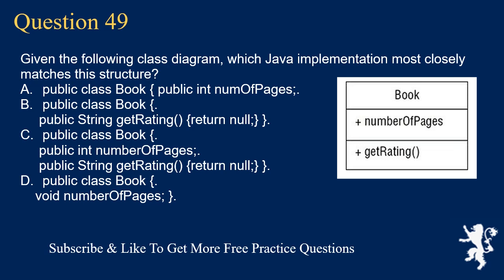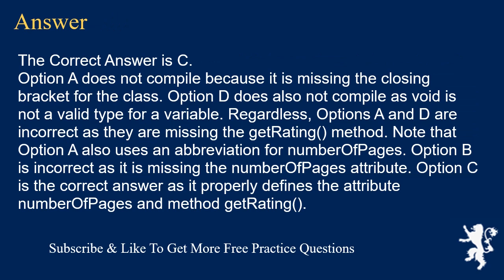Question 49: Given the following class diagram, which Java implementation most closely matches this structure? A) public class Book { public int numOfPages; }, B) public class Book { public String getRating() { return null; } }, C) public class Book { public int numberOfPages; public String getRating() { return null; } }, D) public class Book { void numberOfPages; }. The correct answer is C. Option A is missing the getRating method. Option D does not compile as void is not a valid type for a variable. Option B is missing the numberOfPages attribute. Option C properly defines both the numberOfPages attribute and the getRating method.